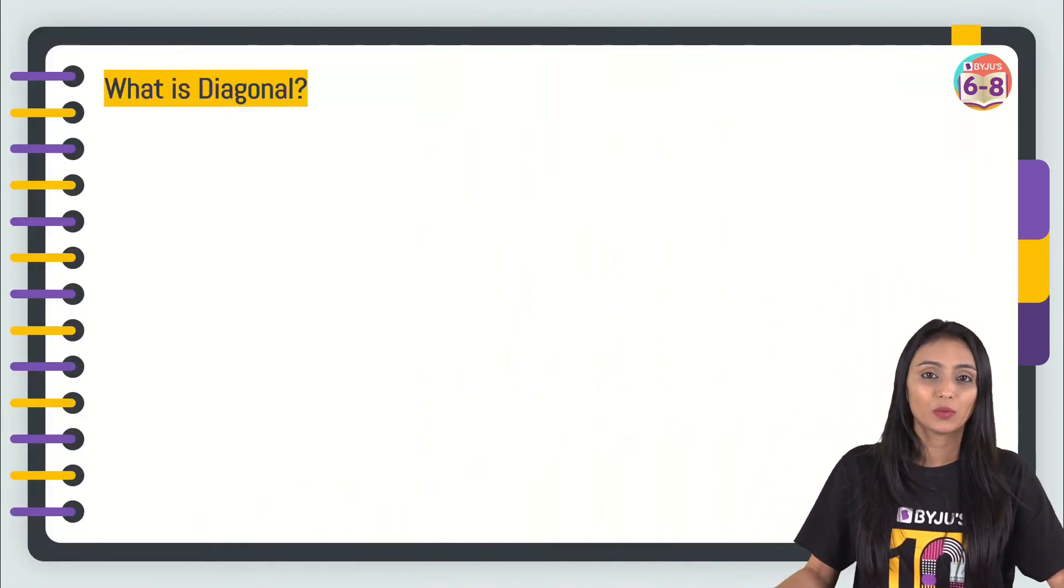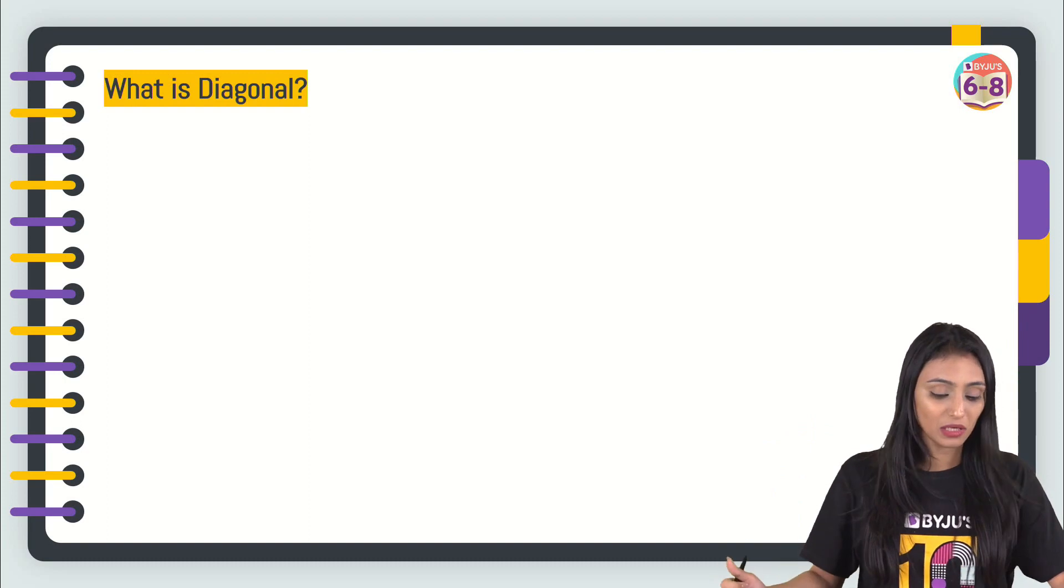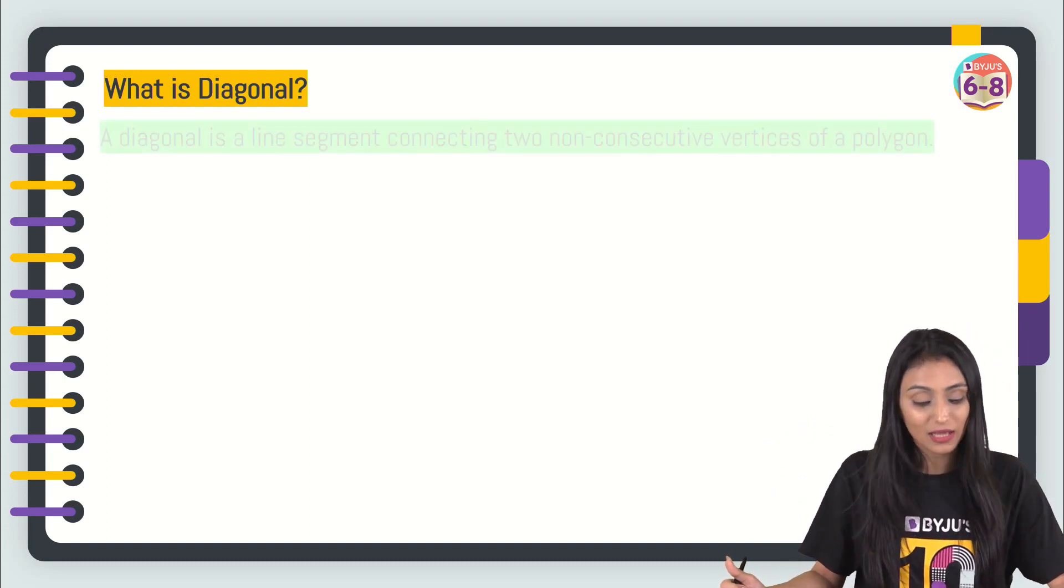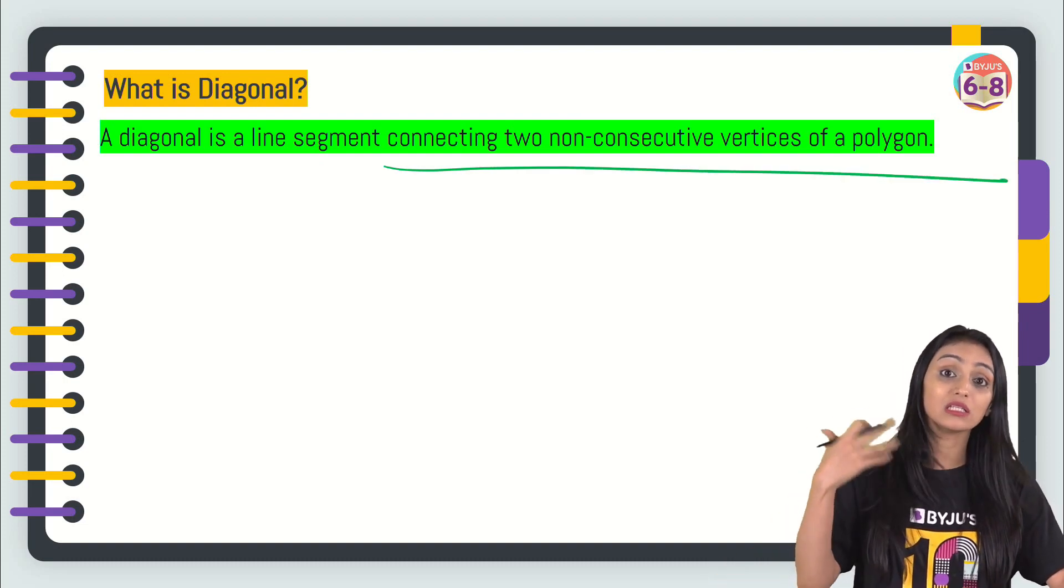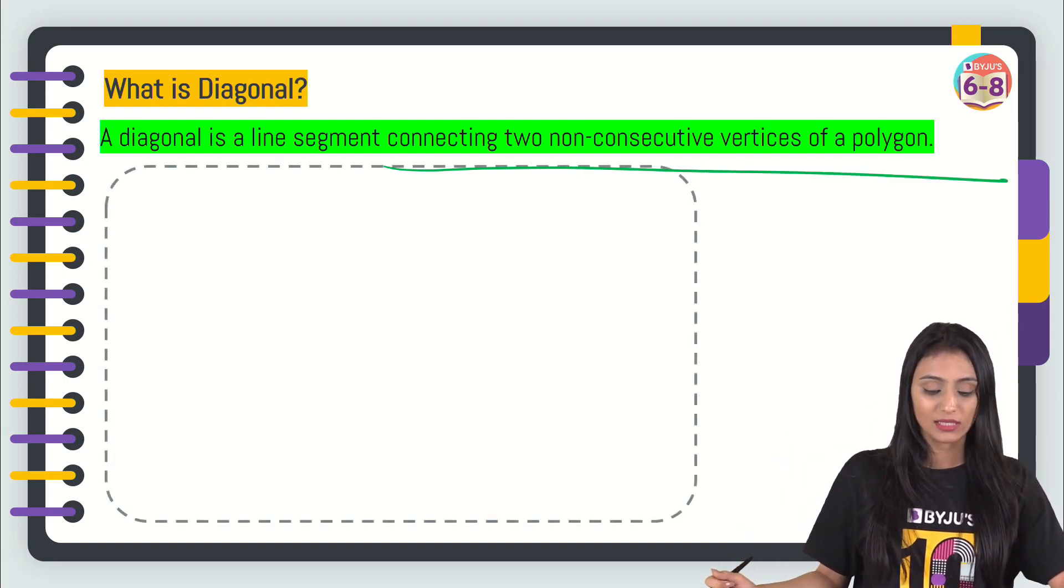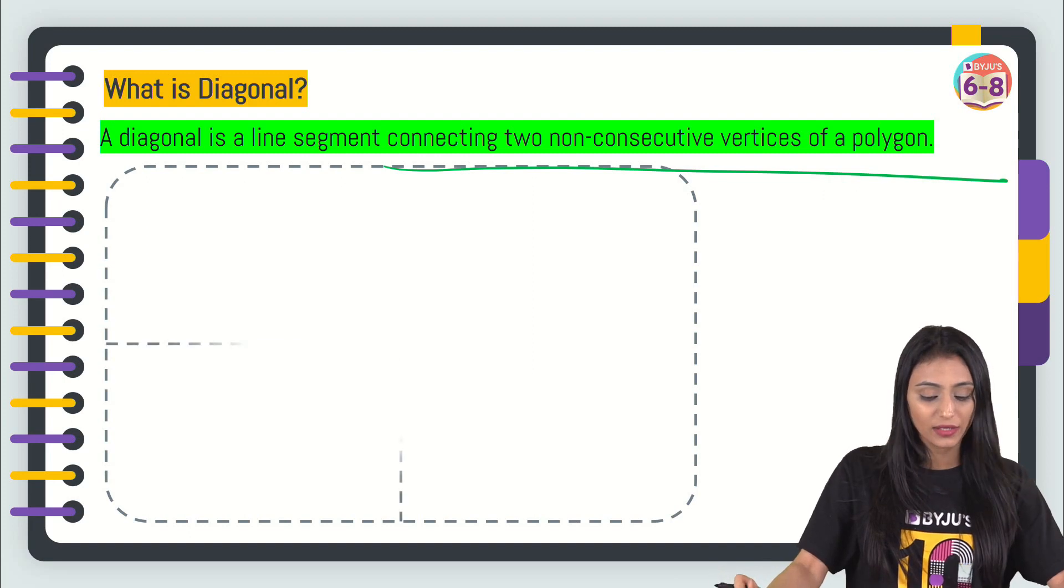Before we learn how to count the number or find the number of diagonals of a polygon, let's first understand what a diagonal is. A diagonal is basically a line segment that connects two non-consecutive vertices of the polygon. What does that mean? Let's take a look at different polygons.